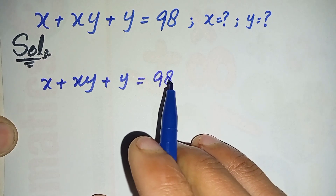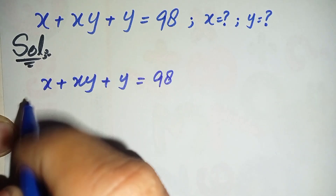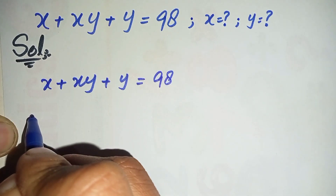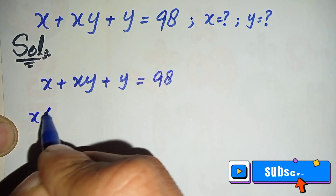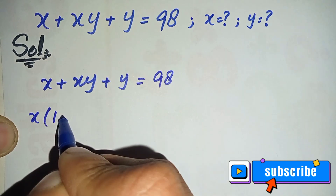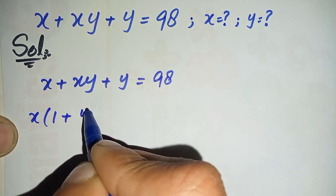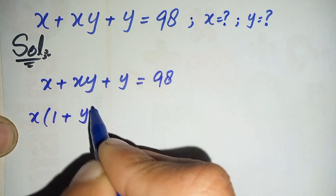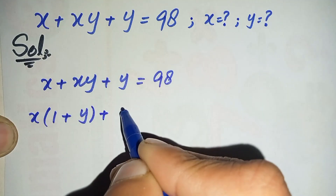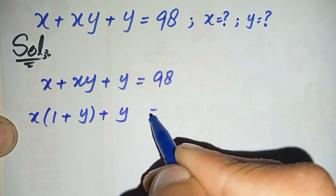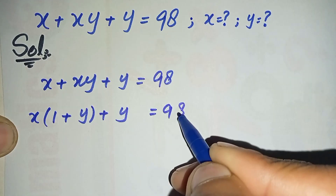First of all, we will take x common from the first two terms. So it will become x times (1 + y), plus y, equals 98.